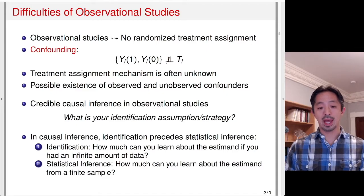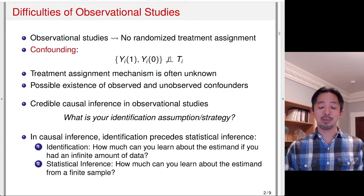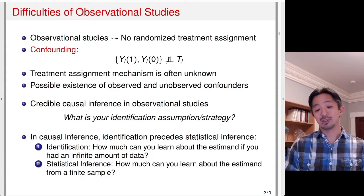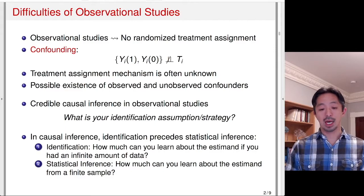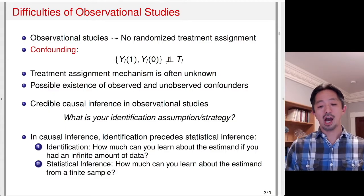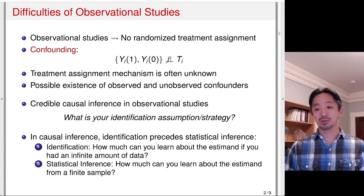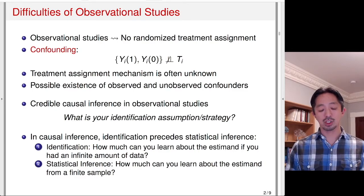Statistical inference, on the other hand, is concerned with how much we can learn about an estimate from a finite sample. Even if we could pinpoint the answer exactly with infinite data, since we only have a finite amount of data, we need to consider standard errors resulting from that small sample size. In causal inference, identification is important because if the quantity is not identified, more data doesn't help you overcome selection bias issues. So we're going to pay particular attention in this course to the issue of identification.